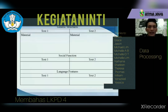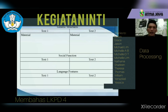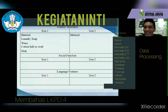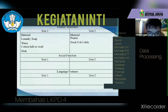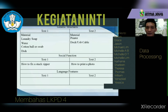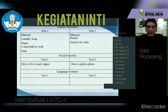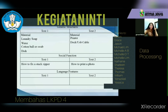What are the materials in the texts? Soap, water, cotton ball or swab, laundry soap, water, cotton ball, printer, and dock or USB cable. Text One is 'How to Fix a Stuck Zipper' and Text Two is 'How to Print a Photo.' Text One uses imperative sentences, and Text Two? Same as Text One — imperative sentences.